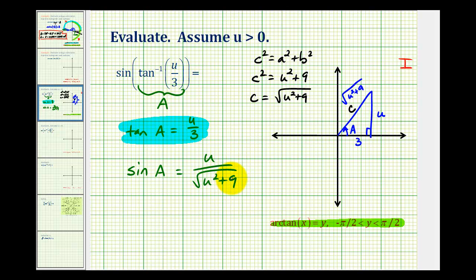And just in case you're asked to rationalize this, we would multiply both the numerator and the denominator by the square root of u squared plus nine. So another way to express the sine of angle A would be u times the square root of u squared plus nine divided by u squared plus nine. So this trig expression simplifies to this ratio or this ratio.